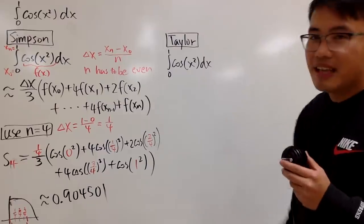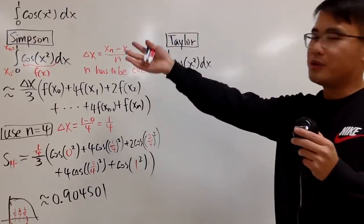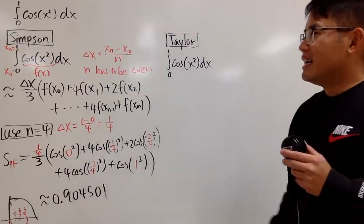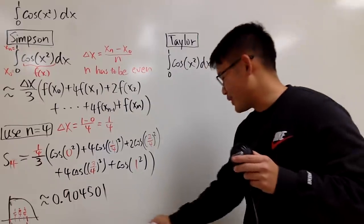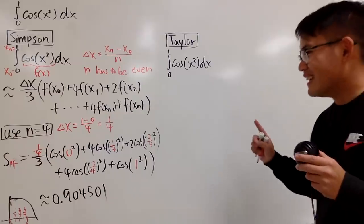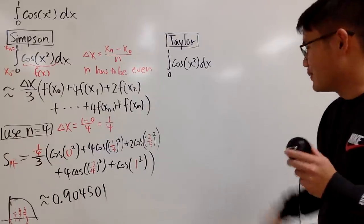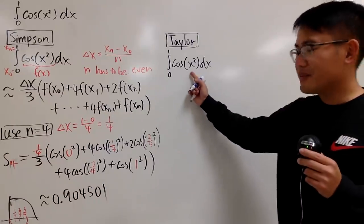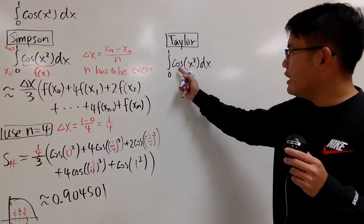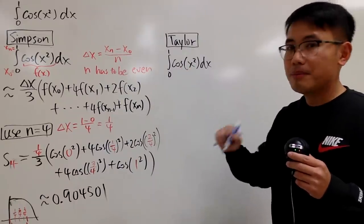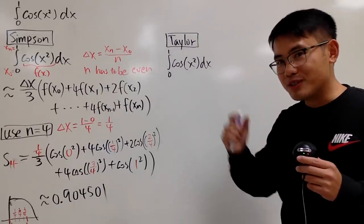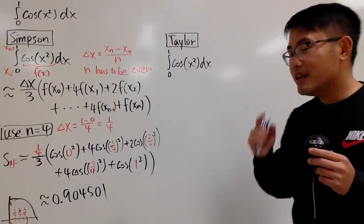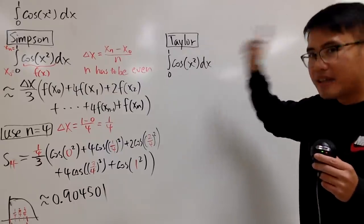Now let's talk about Taylor. To take care of this, as I said earlier, we cannot integrate cosine of x squared. But if we change this to the Taylor series form, then we can integrate them term by term. Thanks to Taylor, let me write this down for you.